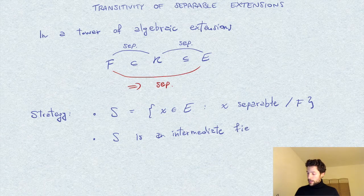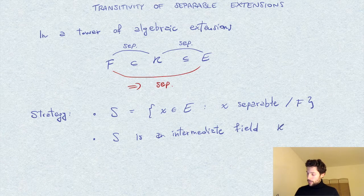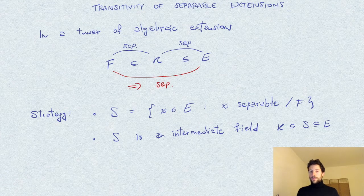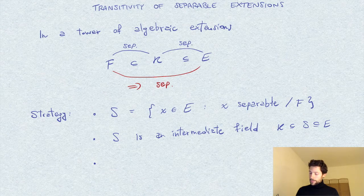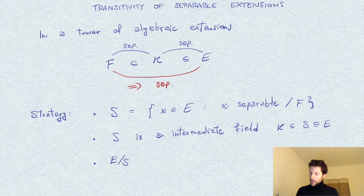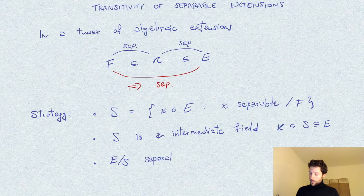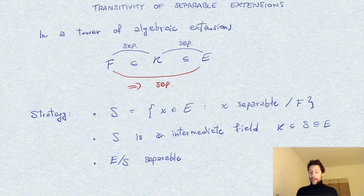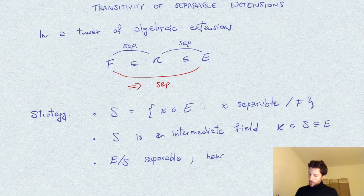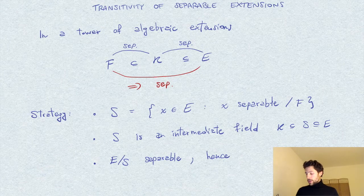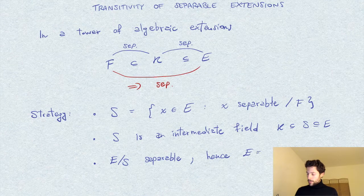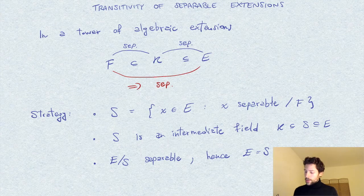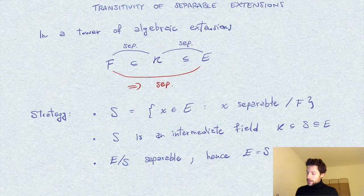And it sits between K and E. Then we will show that, so we can consider E over S as an extension, and this is separable. And from this, we will conclude that E is equal to S, which is what we want to conclude. So any element in E is separable over F.